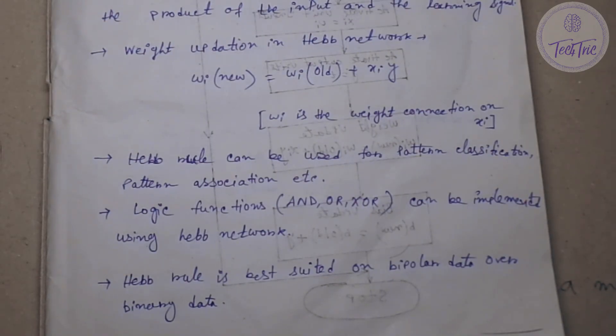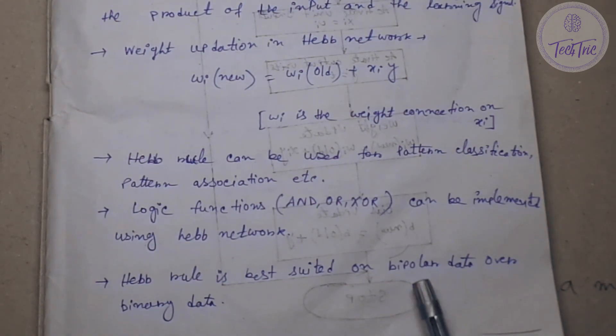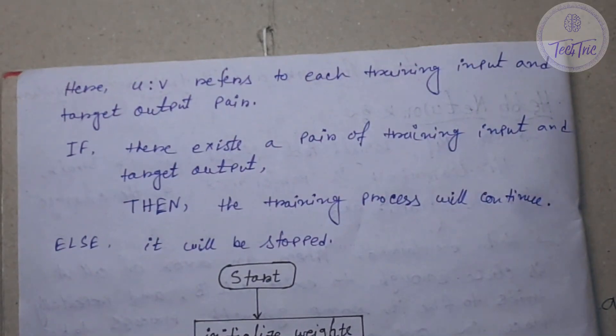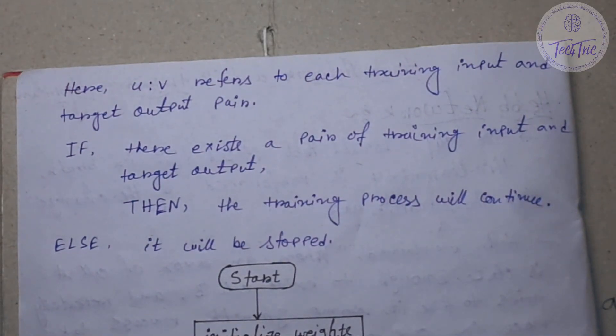Why? Because in binary data there is 1 and 0, and in bipolar there is 1 and minus 1. If we update the weight with 0, everything will be 0. So that is why we use 1 and minus 1, that is bipolar data. Here U refers to each training input and V refers to the target output. So U colon V refers to the each training input and target output pair.